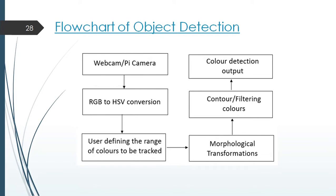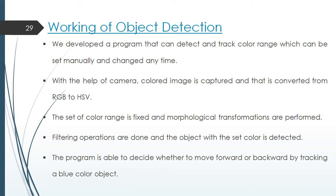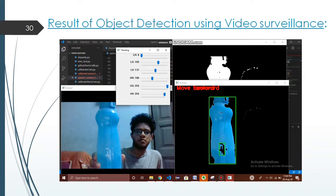This is the flow chart depicting the object detection algorithm. We developed a program that can detect and track color images which we can set manually and can be changed anytime. With the help of camera, colored image is captured and that is converted from RGB to HSB. The set of color images is fixed and morphological transformations are performed. Filtering operations are done and the object with the set color is detected. The program is able to decide whether to move forward or backward by tracking a blue color object. This is a screenshot from our output. Here you can see we have selected a range of blue colors to be detected. And the program is detecting the exact range of blue colors. You can see that it is detecting the water bottle.